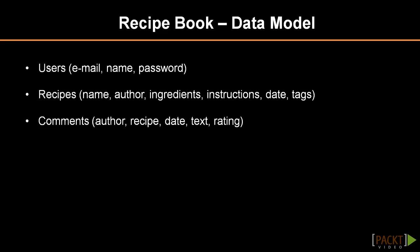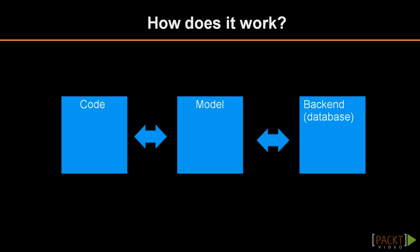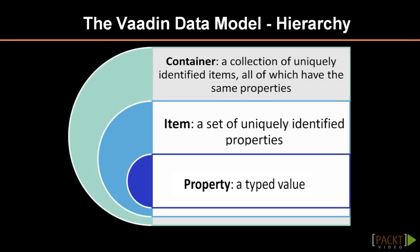Our model is ready and we will implement it in a moment. Once we do, how do we access it with Vaadin? The Vaadin Data Model is an additional layer of abstraction between the UI components and the data source. It consists of three parts, which are declared in the framework as interfaces. This means it is possible to switch one data source with another without worrying much about what provides that data.